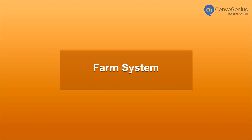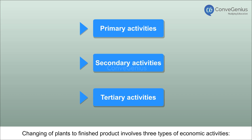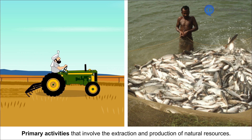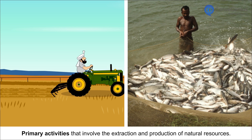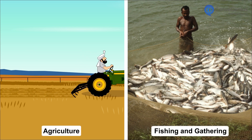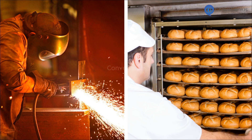Changing of plants to finished product involves three types of economic activities, namely Primary activities, Secondary activities, and Tertiary activities. Primary activities involve the extraction and production of natural resources. Examples include agriculture, fishing and gathering. Secondary activities involve processes related to natural resources.